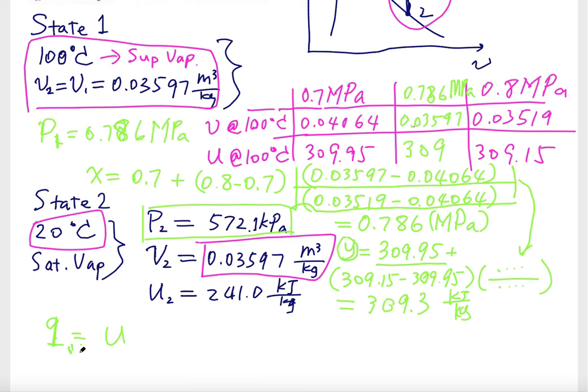Q out is... Let's write the basic equation. Delta E of the system is equal to delta U, because we neglected the kinetic energy and potential energy changes.